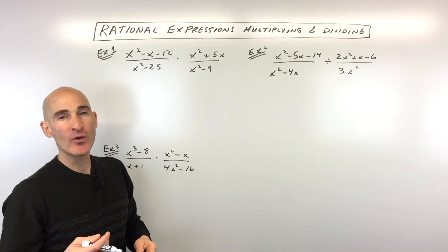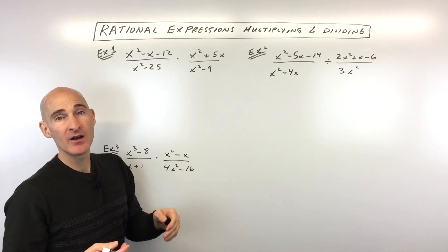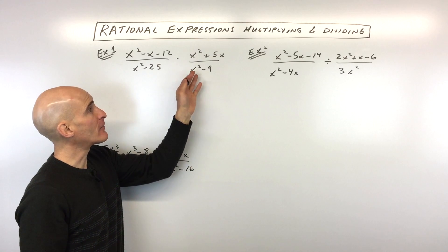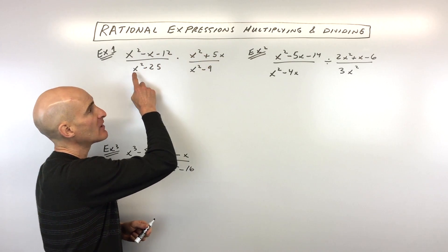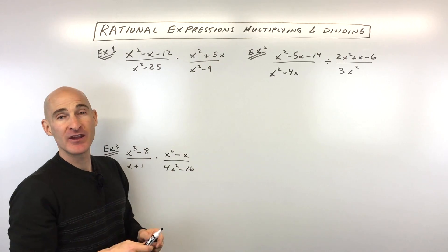You're multiplying these rational expressions. Rational just means like ratio, like it's a fraction. And just like you learned about fractions before, what you do is you multiply the numerators together and then the denominators together, and then you reduce.